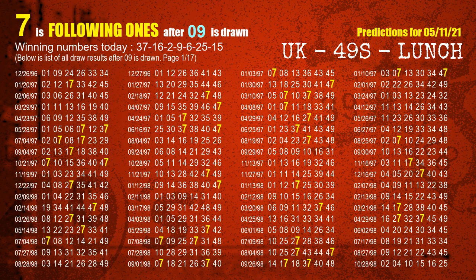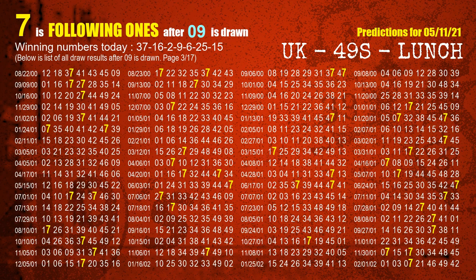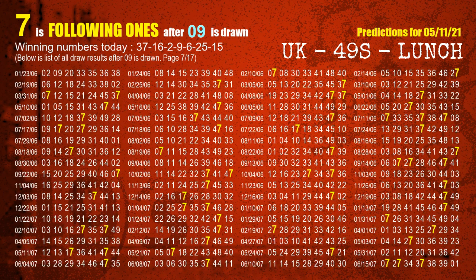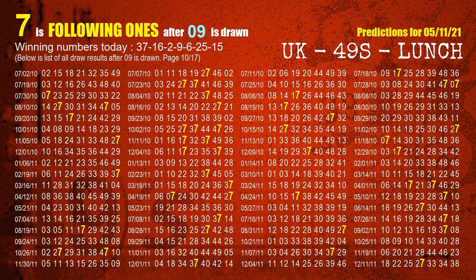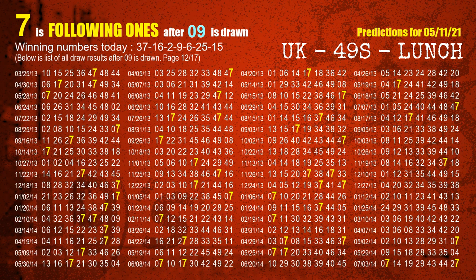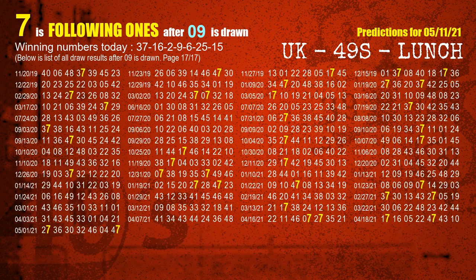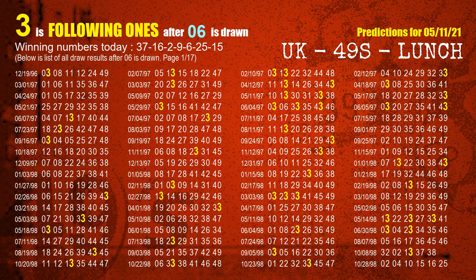The fourth winning number is 09. The most frequently following units digit is 7 when 09 is the winning number in the last draw. The fifth winning number is 06. The most frequently following units digit is 3 when 06 is the winning number in the last draw.